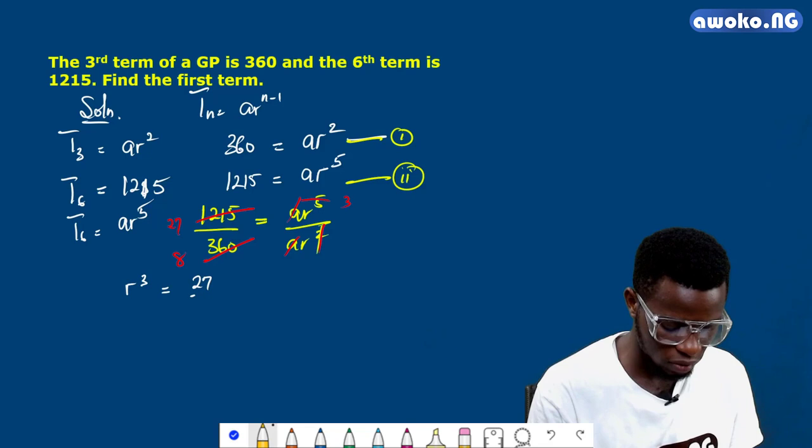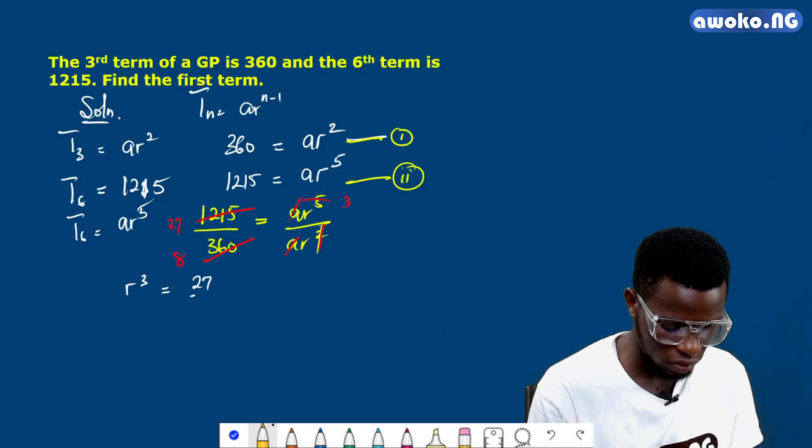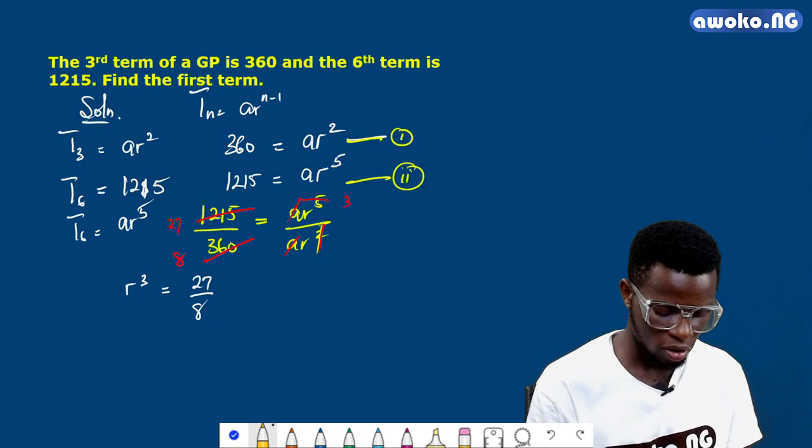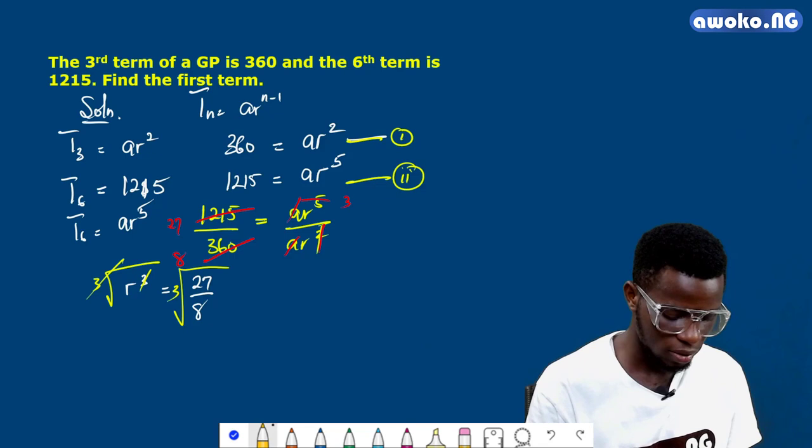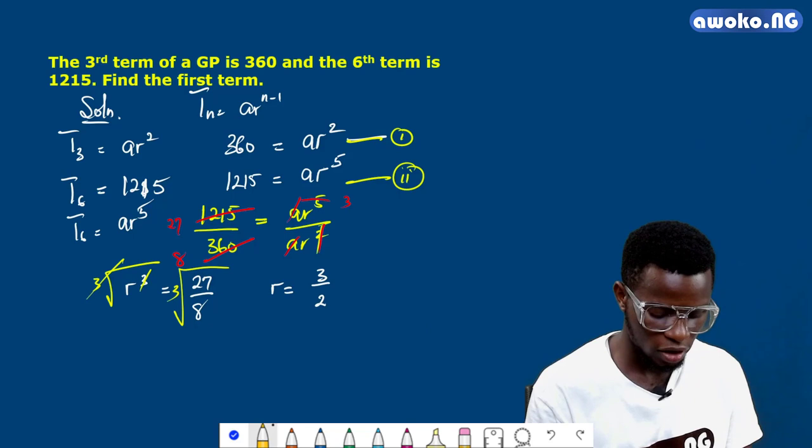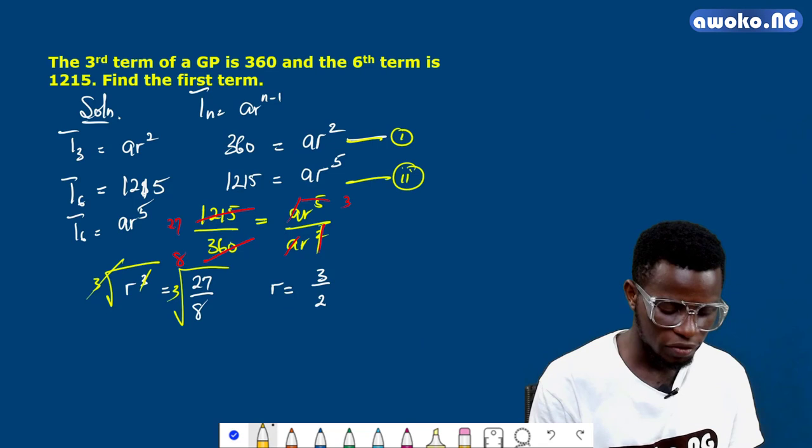So we have ar³ equals 27 over 8. To make r stand alone, I have to find the third root of both sides. If I do that, this will cancel out and r will be equal to 3 over 2. This is not our focus—our focus is to find the first term, but we can't find the first term unless we know the common ratio.